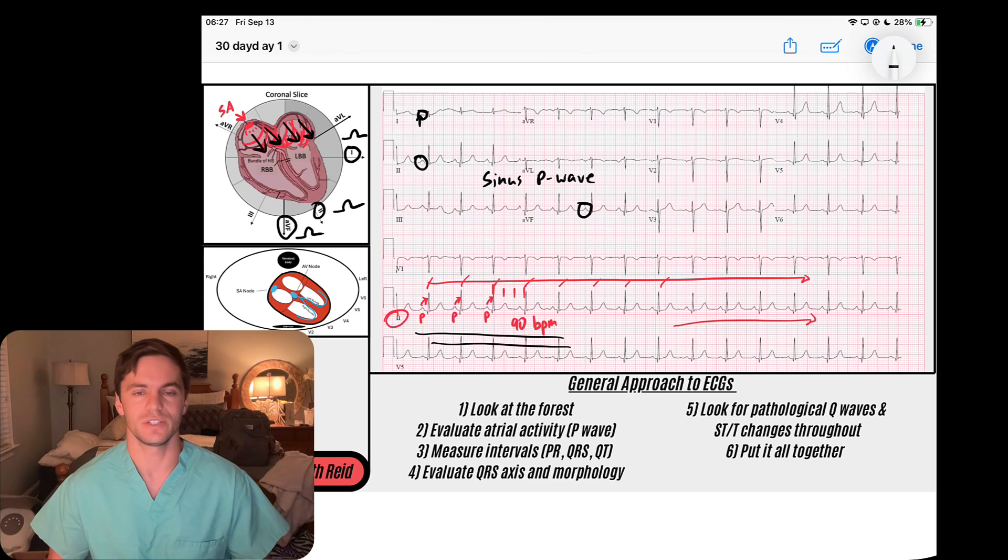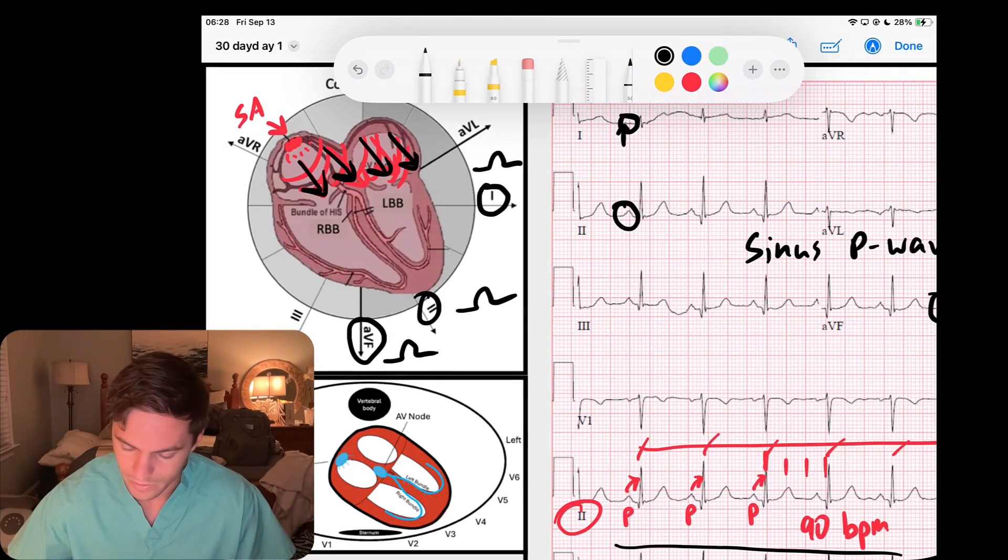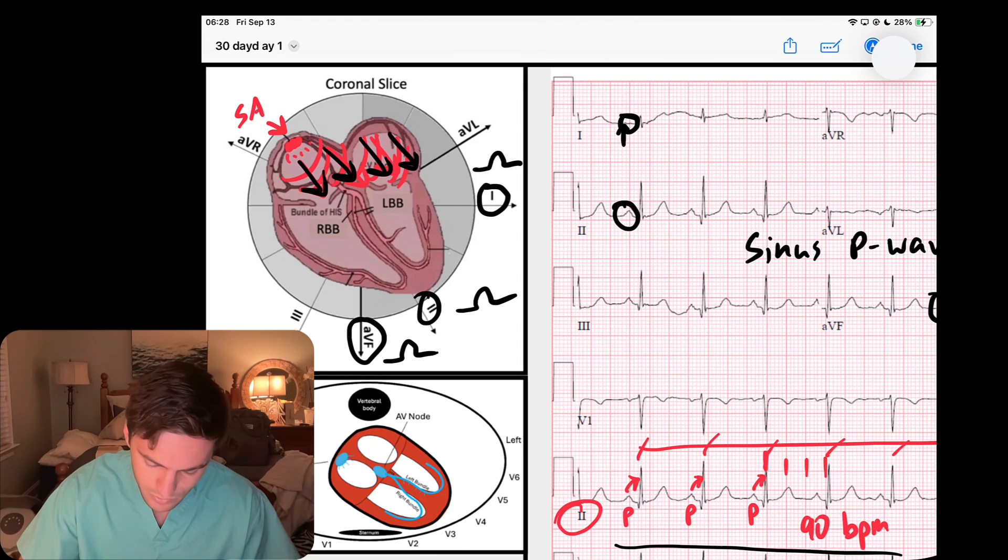So that's my atrial activity—I've got a sinus P wave driving these narrow complex QRS complexes, and that's really helpful to understand if this is a sinus rhythm. Next, I just evaluated my sinus node. Let's evaluate the next anatomical landmark in our conduction system, and that's the AV node.